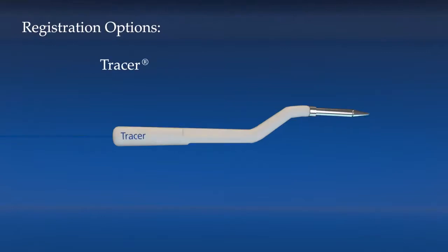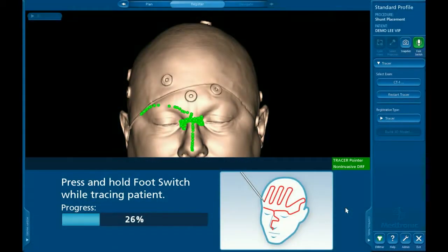Tracer registration does not require the use of fiducials and instead collects 300 points from a trace on the patient's face and scalp and maps them to the surface geometry of the patient's preop scan. Because the tracer probe can be passed along the scalp through a patient's hair,